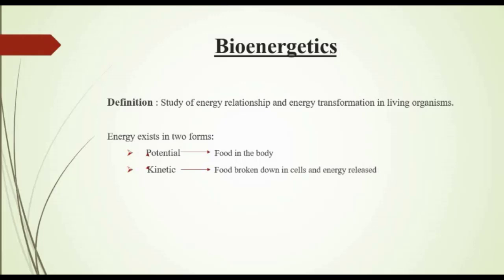Energy exists in two forms: potential energy and kinetic energy. Organisms obtain energy by metabolizing the food they eat or prepare. Food contains potential energy in its bonds. When these bonds are broken down, a large amount of kinetic energy is released. Some of the energy is stored as potential energy in the bonds of ATP molecules, while the rest escapes as heat.